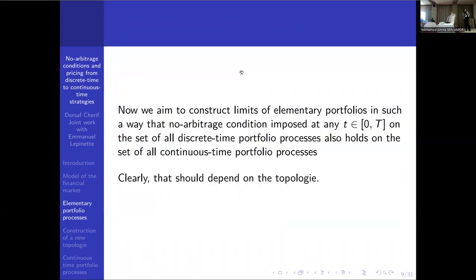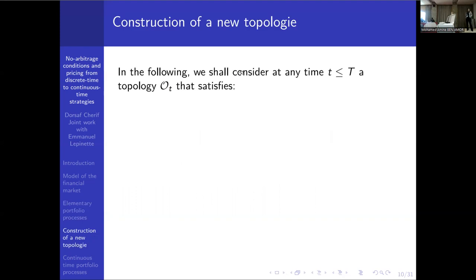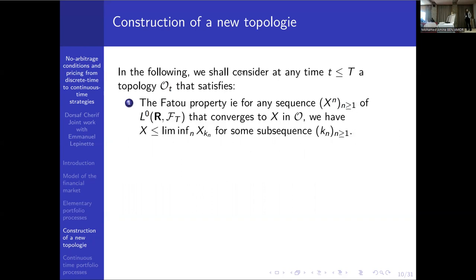We aim to construct limits of elementary portfolios such that no arbitrage conditions imposed on the set of discrete time processes also hold on the set of continuous time portfolios. The key objective when going to continuous time was clear: it must depend on the topology, on the notion of convergence. We realized we needed a topology satisfying three specific conditions.